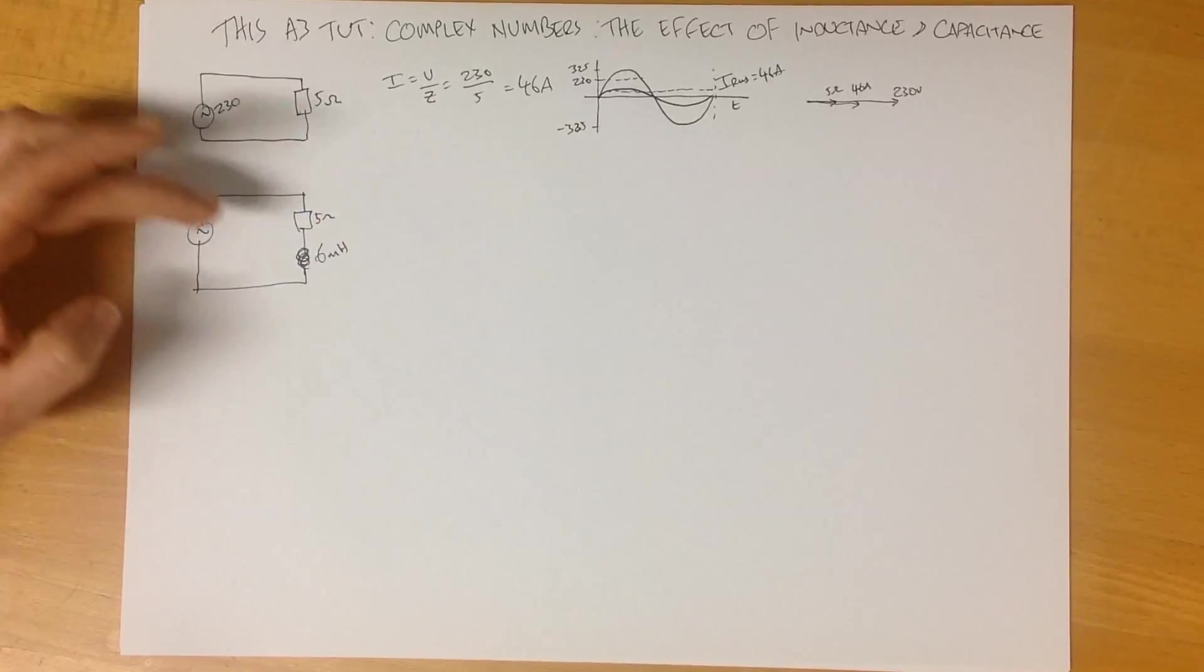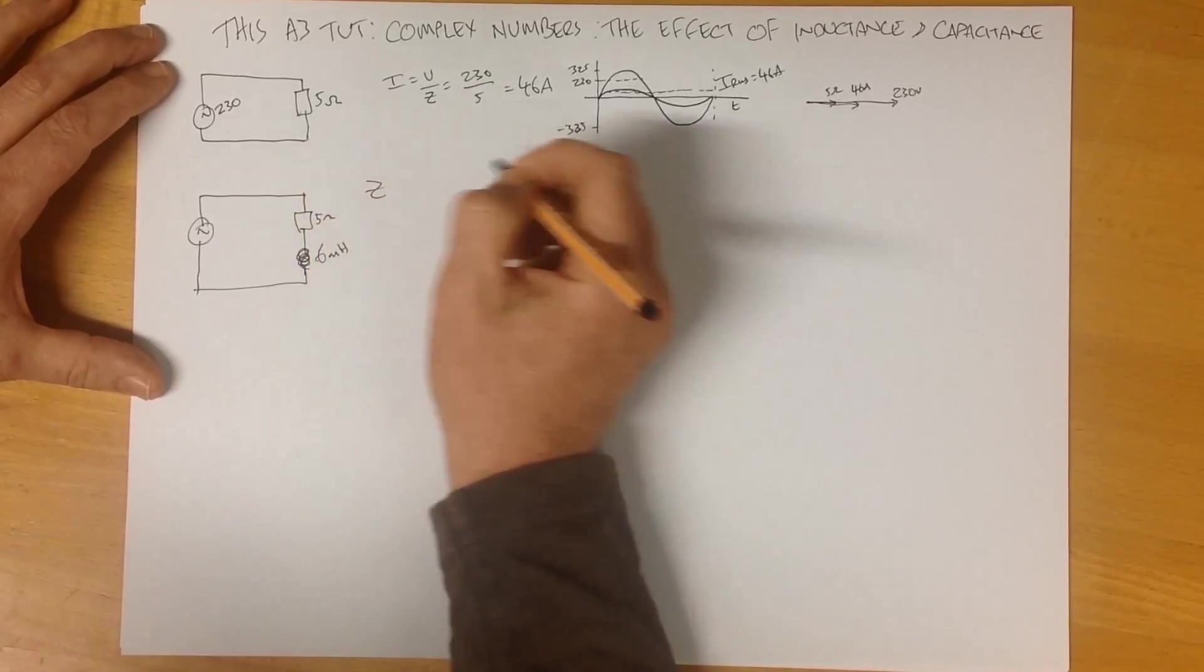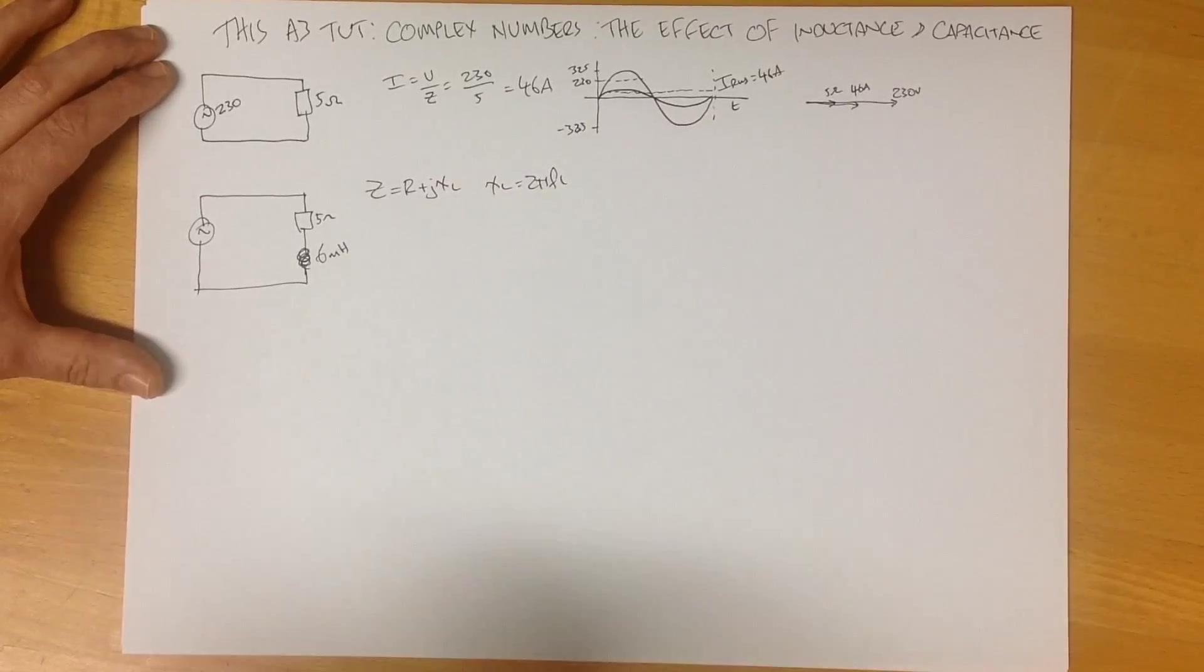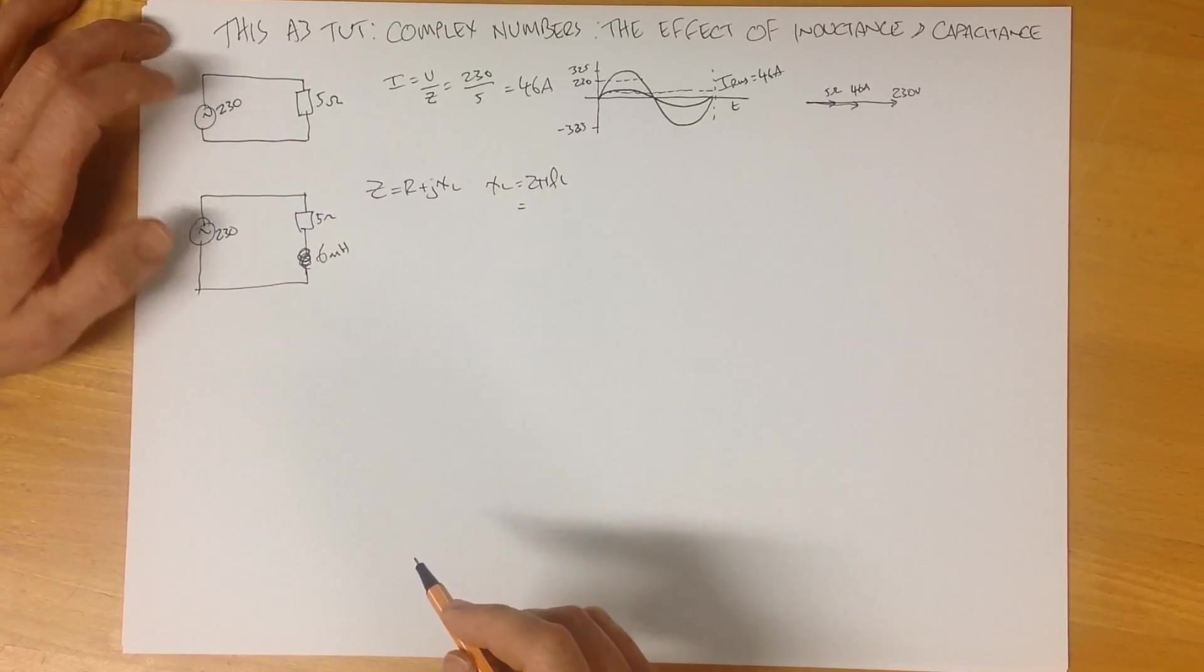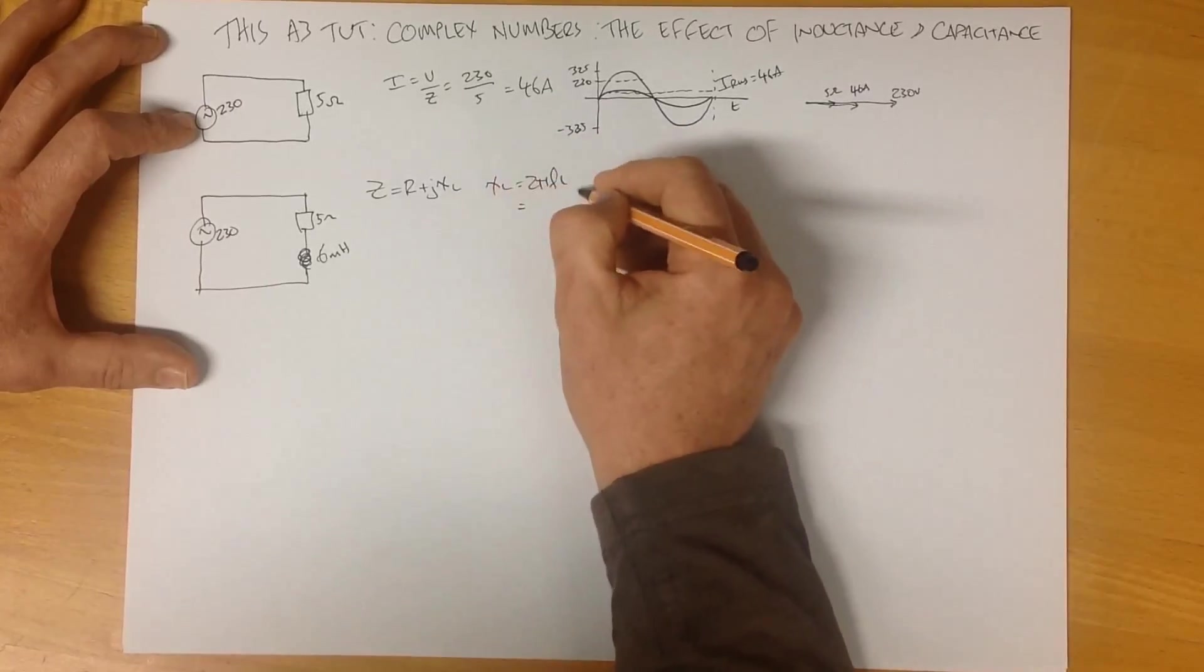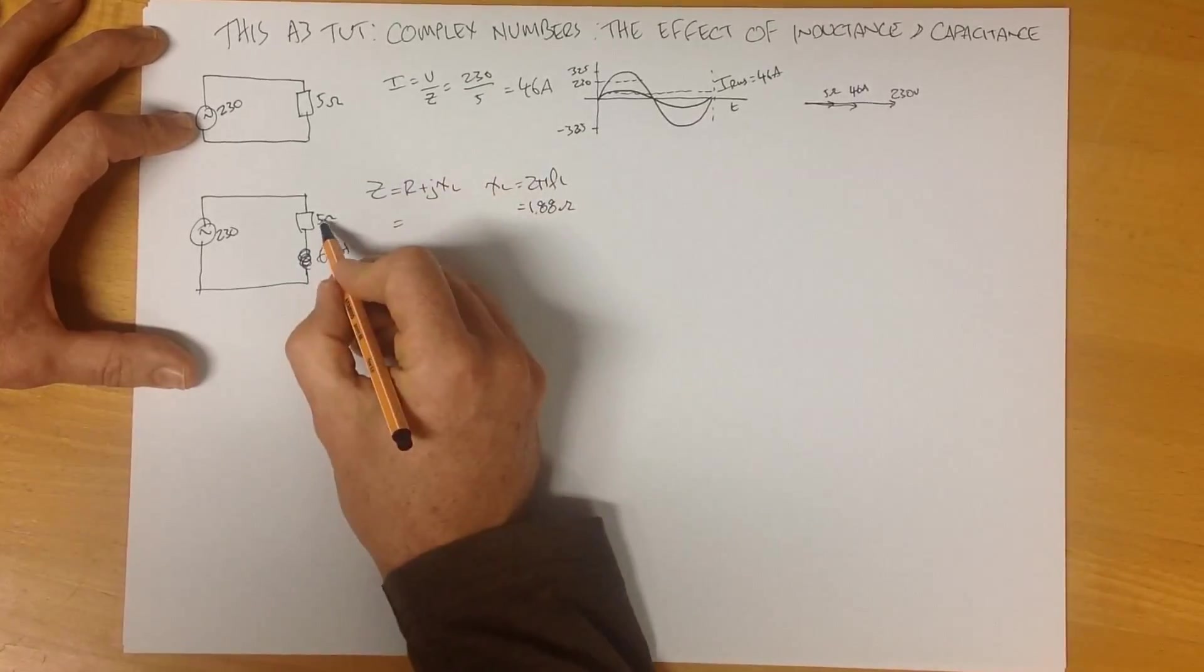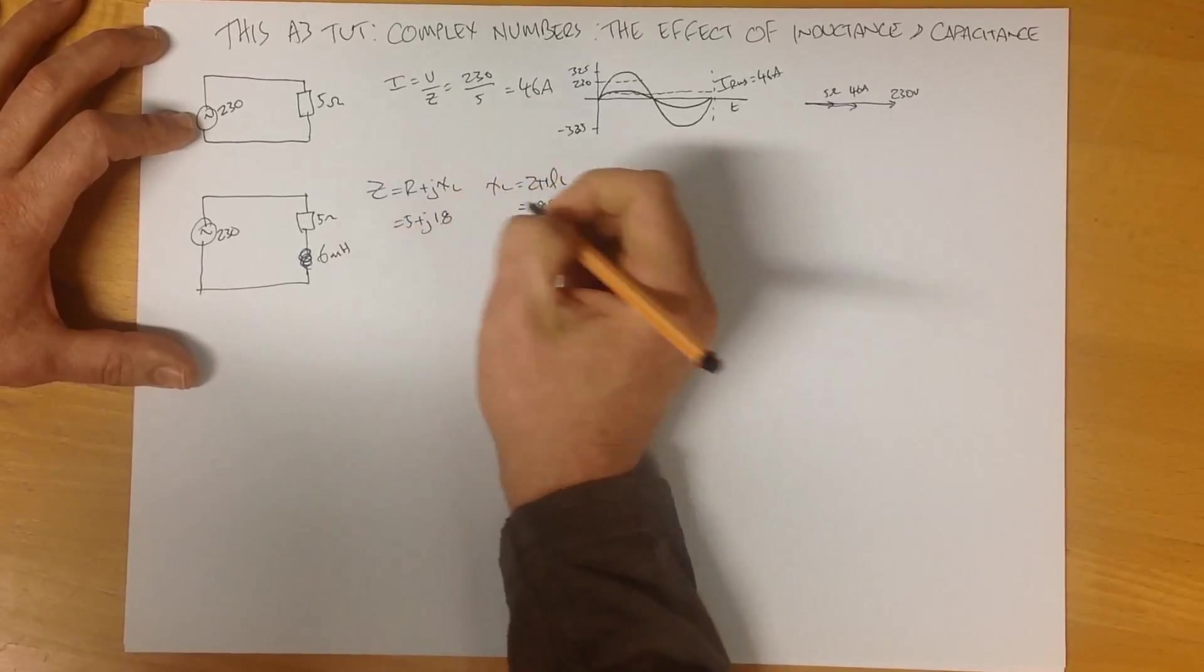Now, our impedance of our circuit is no longer 5 ohms. Our impedance of our circuit is a combination of these two points here. And the impedance is R plus JXL, where XL is 2 pi FL. We've worked on 230, so it's fairly safe to say that this circuit will be 50 hertz. If we go through and calculate that for 50 hertz, we end up with an inductive reactance of 1.88 ohms. Over here now, we need to find our total impedance. So our total impedance is our resistance, plus our inductive reactance, 1.88 ohms.